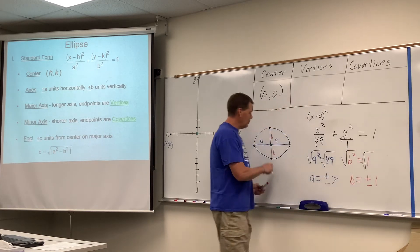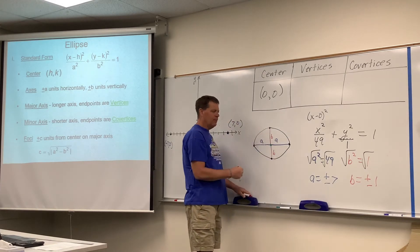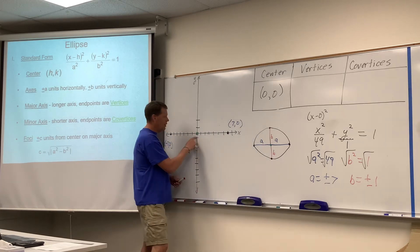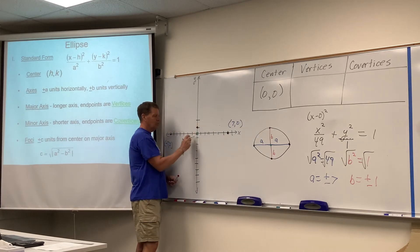So, we're going to travel 1 unit up and down from the center, the plus 1 would be up 1, the minus 1 would be down 1. So, from the center, up 1, just 1 unit.